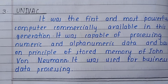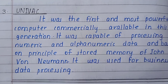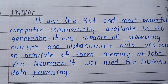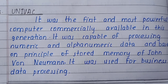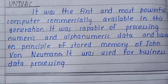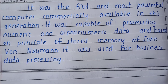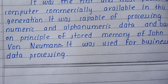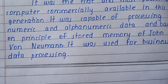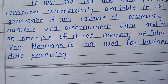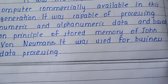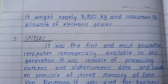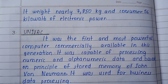The third device is UNIVAC. It was the first and most powerful computer commercially available in this generation. It was capable of processing numeric and alphanumeric data and was based on the principle of stored memory by John von Neumann. It was used for business data processing.